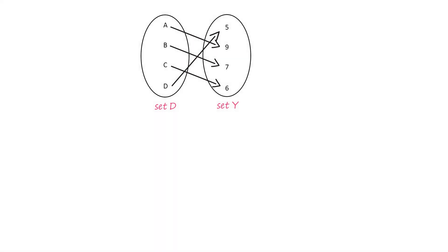Since the range is a set of real numbers, this function is a real valued function. Now consider the sets D and Y related to each other as shown. Can we consider this relation as a real valued function? Pause this video and give it a thought.